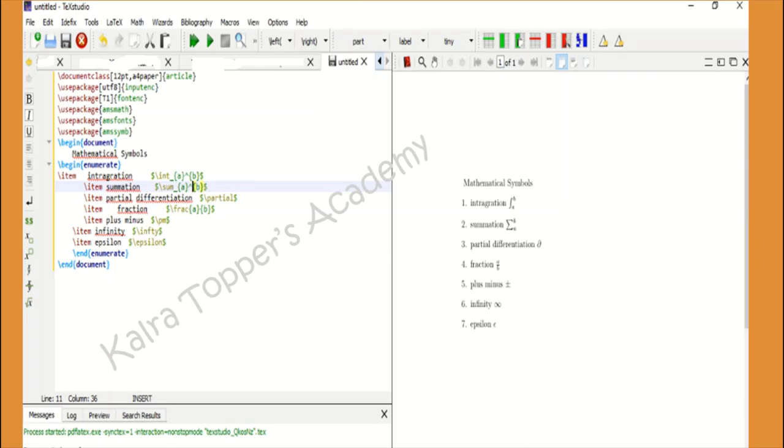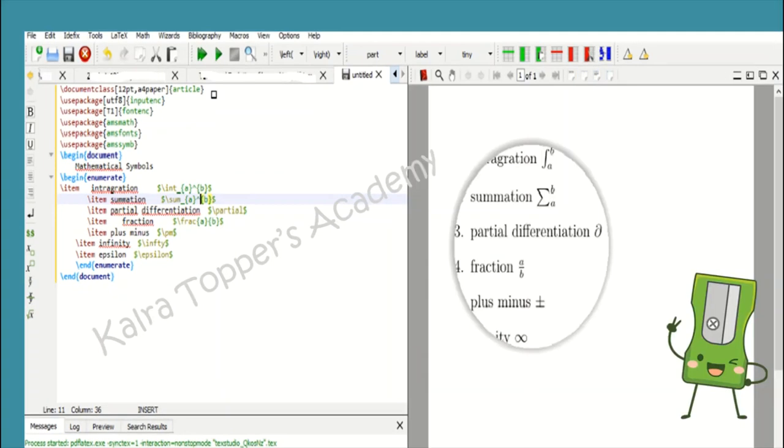You may have seen that I have used an environment called enumerate here. Enumerate is like when you use list item or ordered list in HTML. Here the counterpart is enumerate which will generate the ordered list. You can see one, two, three, four here. This is the function of enumerate.